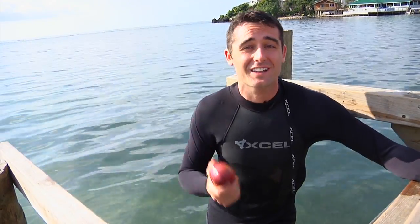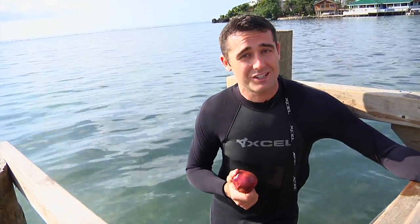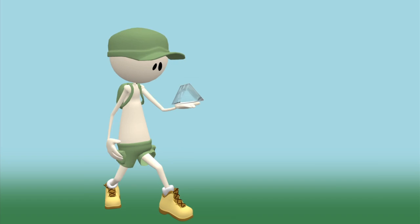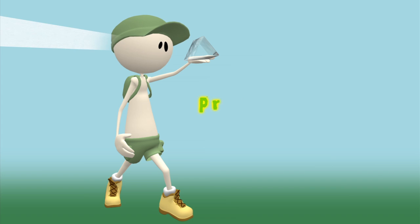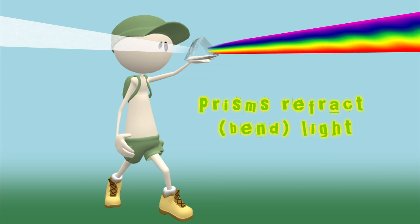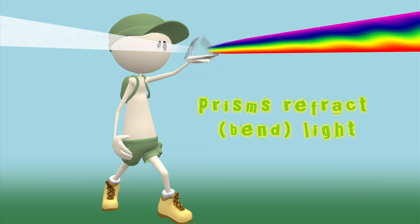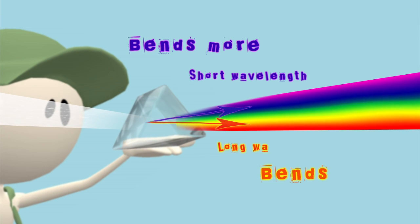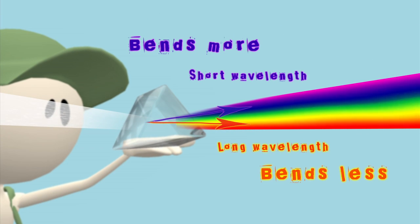Did you know that the color of light is related to its wavelength? Sunlight is made up of many wavelengths of light, and each wavelength is a different color. You can see the different colors in white light when it passes through a prism and the light bends or refracts. The shorter wavelengths bend more than the longer wavelengths, so the light separates into different colors, like a rainbow. The shortest wavelengths are violet, and the longest wavelengths are red.